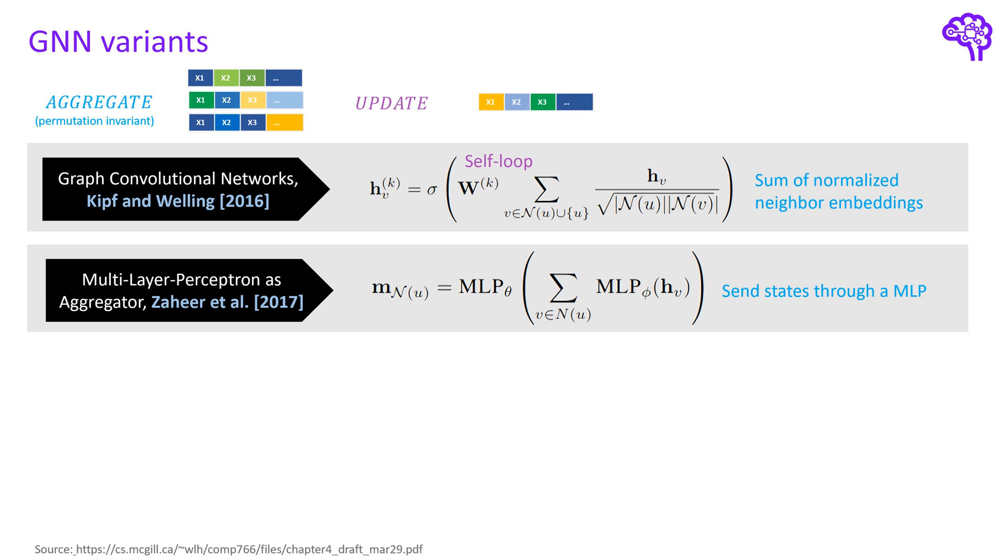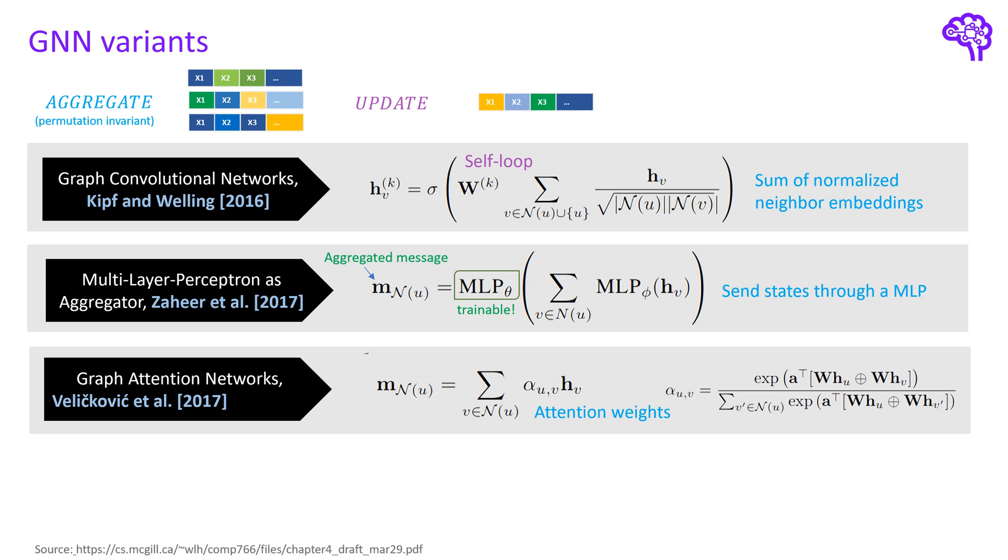Another work uses multi-layer perceptrons so basically feed forward networks to perform the aggregate operation. This means that there are learnable weights which can be optimized for the best aggregation of the neighbor states. Another popular paper applied the attention mechanism to GNNs. This means that the importance of the features of the neighbor states is considered for the aggregation. As a result the updated embedding contains more information about important neighbor features.